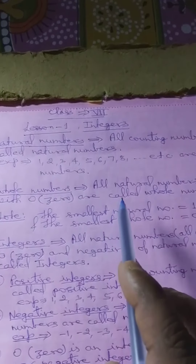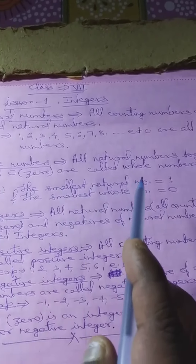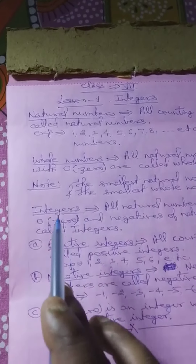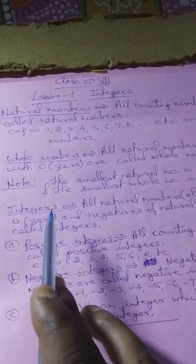Whole numbers. All natural numbers together with zero are called whole numbers. Note: the smallest natural number is 1, and the smallest whole number is 0. The difference between whole number and natural number — natural number starts from 1, but whole number starts from 0. So only one difference: if 0 is not in the set, it is natural numbers; if 0 is included, it is whole numbers.